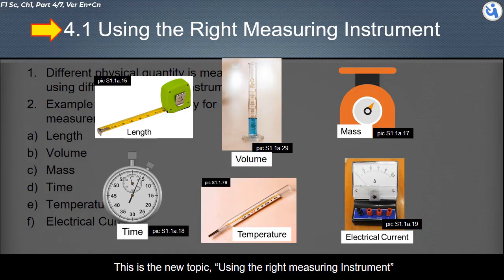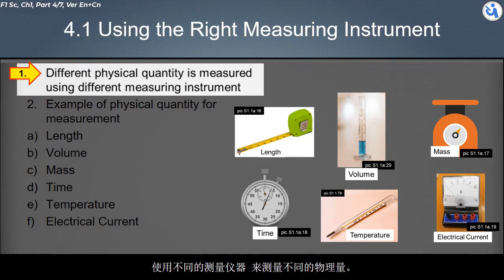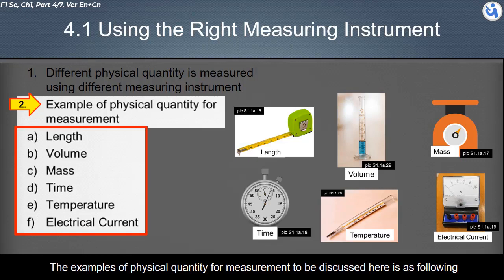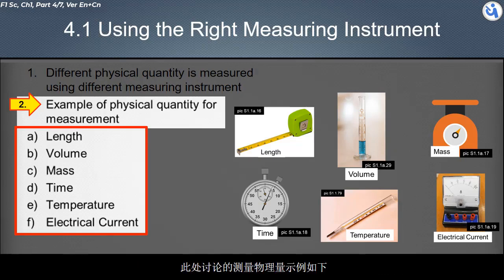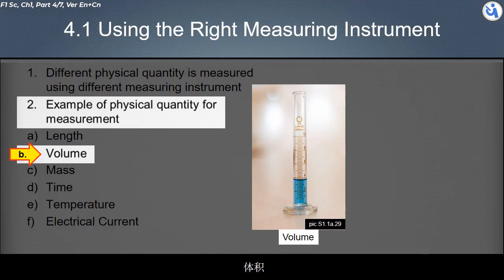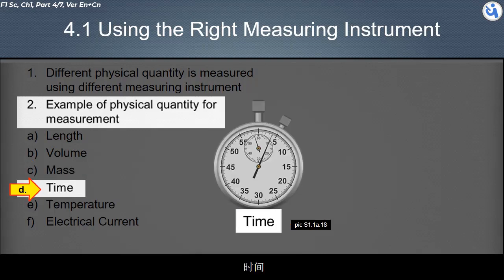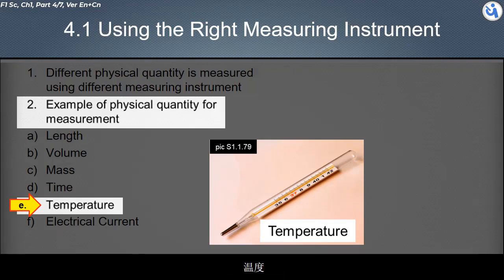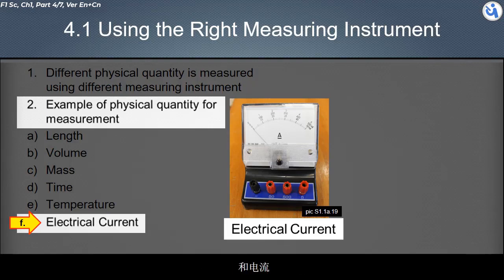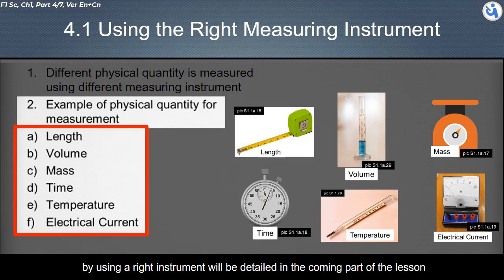This is the new topic, using the right measuring instrument. Using different measuring instrument, the examples of physical quantity for measurement to be discussed here is as following. They are length, volume, mass, time, temperature, and electrical current. How these physical quantity from an object or phenomena being measured by using a right instrument will be detailed in the coming part of the lesson.